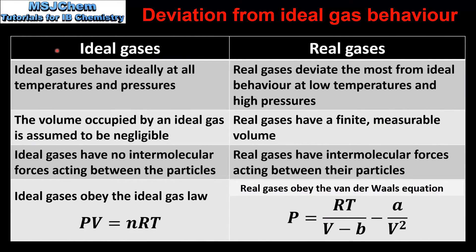We'll end the video with a comparison of ideal gases and real gases. Ideal gases behave ideally at all temperatures and pressures, while real gases deviate the most from ideal behavior at low temperatures and high pressures. The volume occupied by an ideal gas is assumed to be negligible, whereas real gases have a finite measurable volume. Ideal gases have no intermolecular forces acting between particles, but real gases do. Ideal gases obey the ideal gas law PV = nRT, while real gases obey the van der Waals equation, which we'll look at in more detail in the next video.